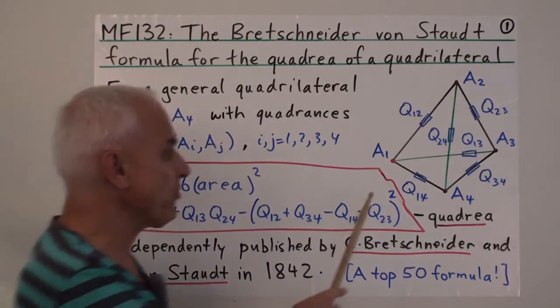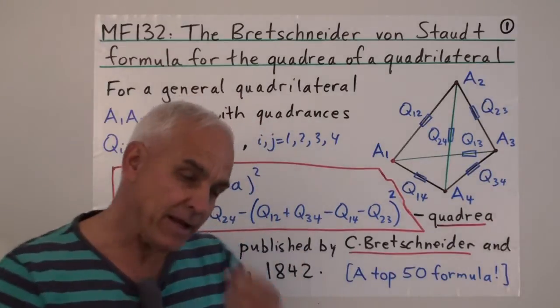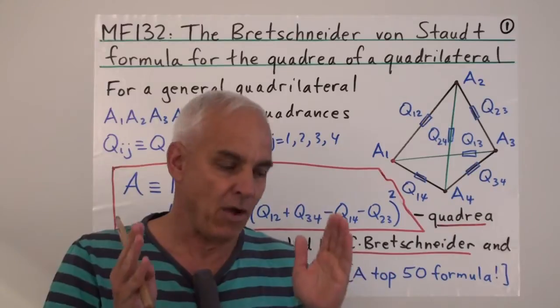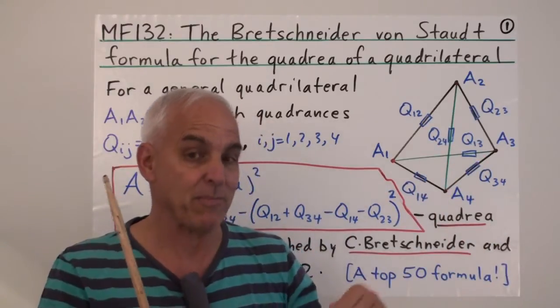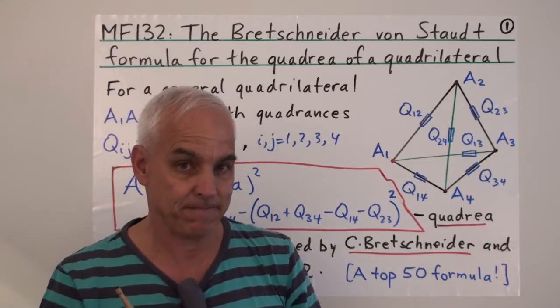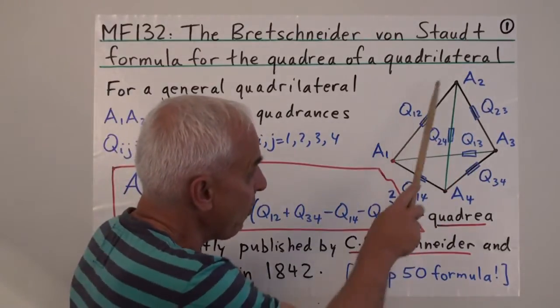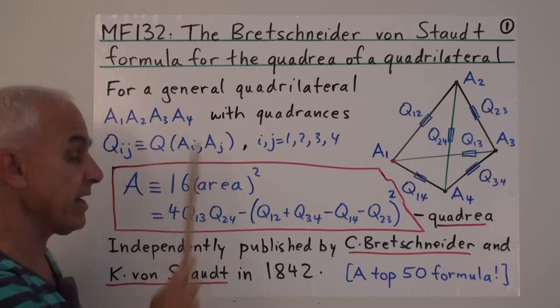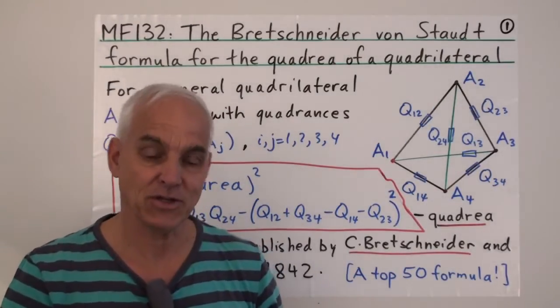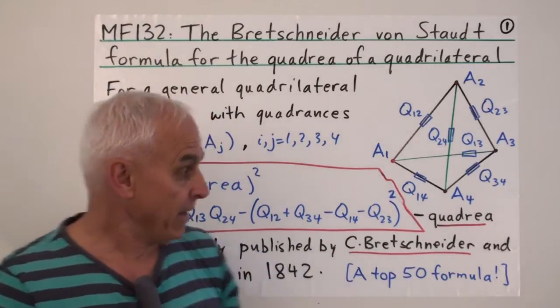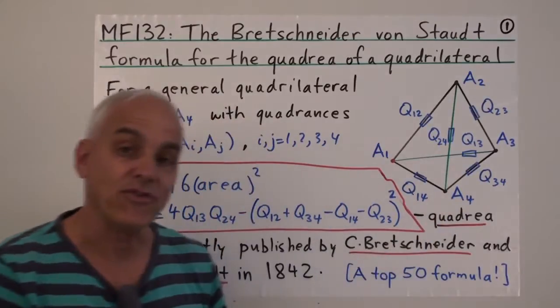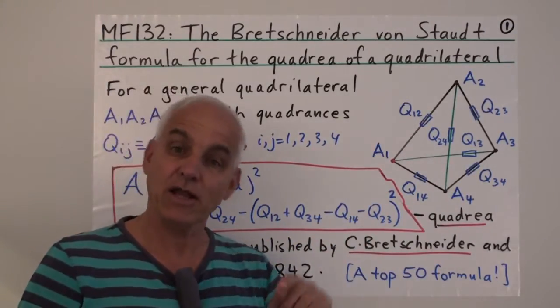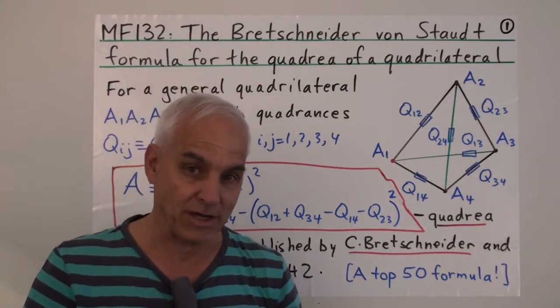So we're talking about a quadrilateral in the plane and a very famous formula that illustrates the power of thinking rationally. In other words, the power of thinking in a rational way without any reference to real numbers or infinite processes that are implicit most of the time when we're doing real number arithmetic. In particular, this quadrilateral, let's call it A1, A2, A3, A4, has quadrances QIJ. So QIJ is the quadrance between AI and AJ.